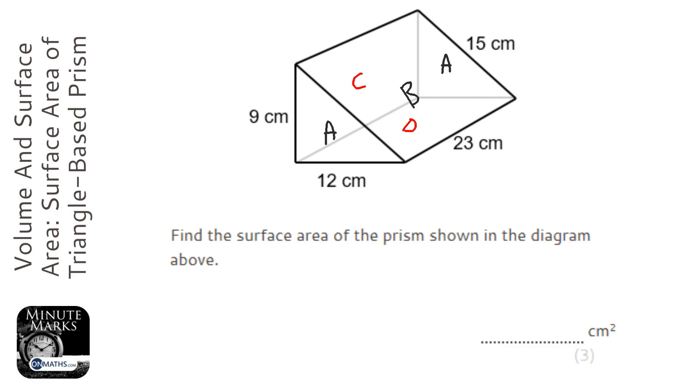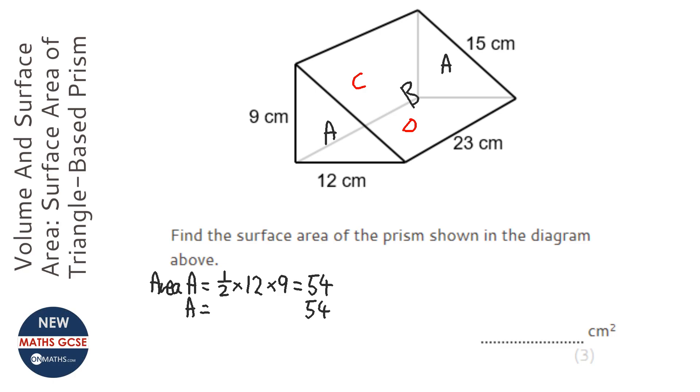So we're going to work out A first. And to do that, we do half times the base, which is going to be 12, times the height, which is 9. On the calculator, 12 times 9 divided by 2, which is 54. Now I'm going to do that twice because there's two triangles.